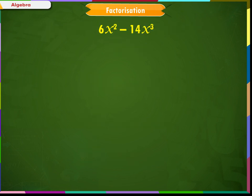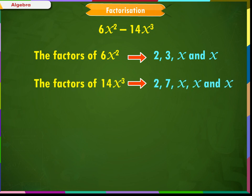Example: 6x² minus 14x³. This expression has two terms, 6x² and 14x³. The factors of 6x² are 2, 3, x, and x. The factors of 14x³ are 2, 7, x, x, and x.